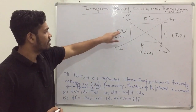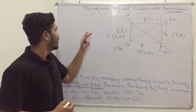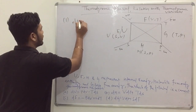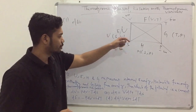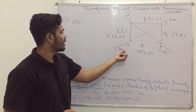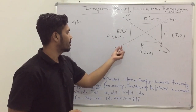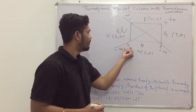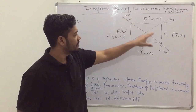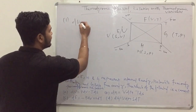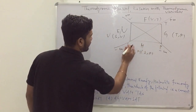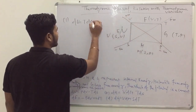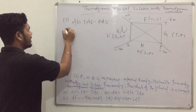Now let's derive the relations. For internal energy U, since it is a function of S and V: the entropy diagonal goes from minus to plus infinity, so it is positive, and the volume diagonal goes from plus to minus infinity, so it is negative. Therefore: dU = TdS − PdV.